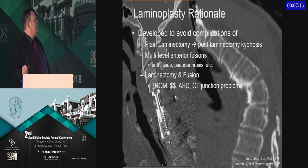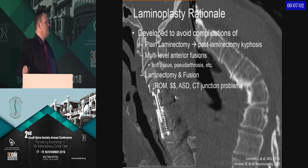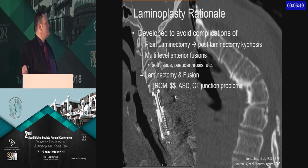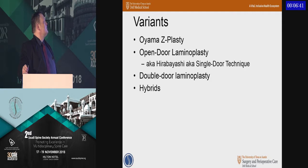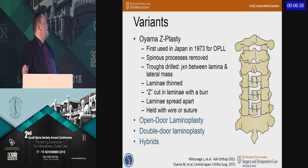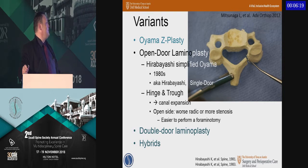Laminoplasty was developed to avoid complications of post-laminectomy over multiple levels, including post-laminectomy kyphosis. Even with lateral mass screws available, laminoplasty remains a workhorse option with proper alignment due to its less detrimental impact on range of motion, savings in implant costs, and fewer adjacent segment problems. There are many variants: the first was the Oyama Z-plasty, a complex osteoplastic technique. In the U.S., this has largely given way to the open-door (Hirabayashi) laminoplasty, with a trough cut on one side and a hinge on the other.